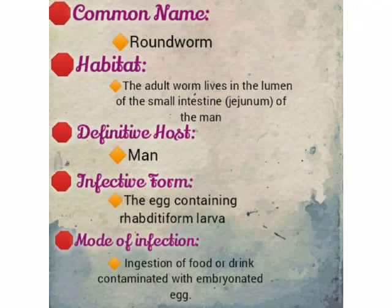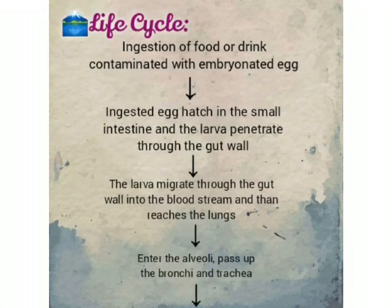First, Ascaris lumbricoides. Common name: roundworm. Habitat: the adult worm lives in the lumen of the small intestine of man — definitive host is man. Infective form: the egg containing rhabditiform larva. Mode of infection: ingestion of food or drink contaminated with embryonated egg.